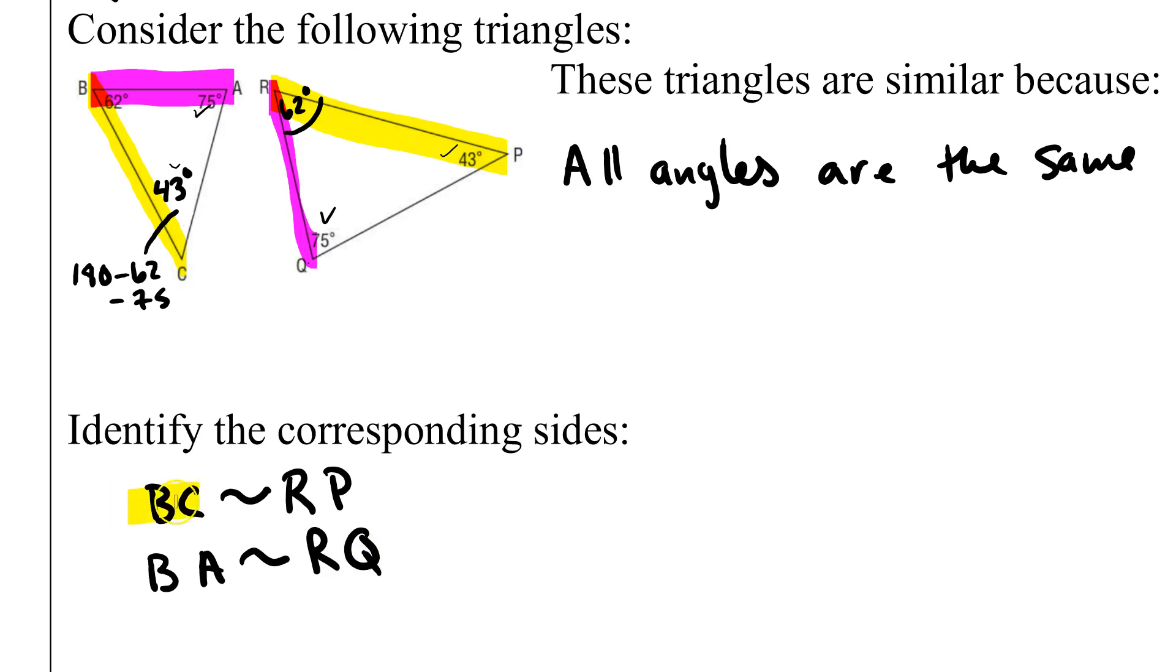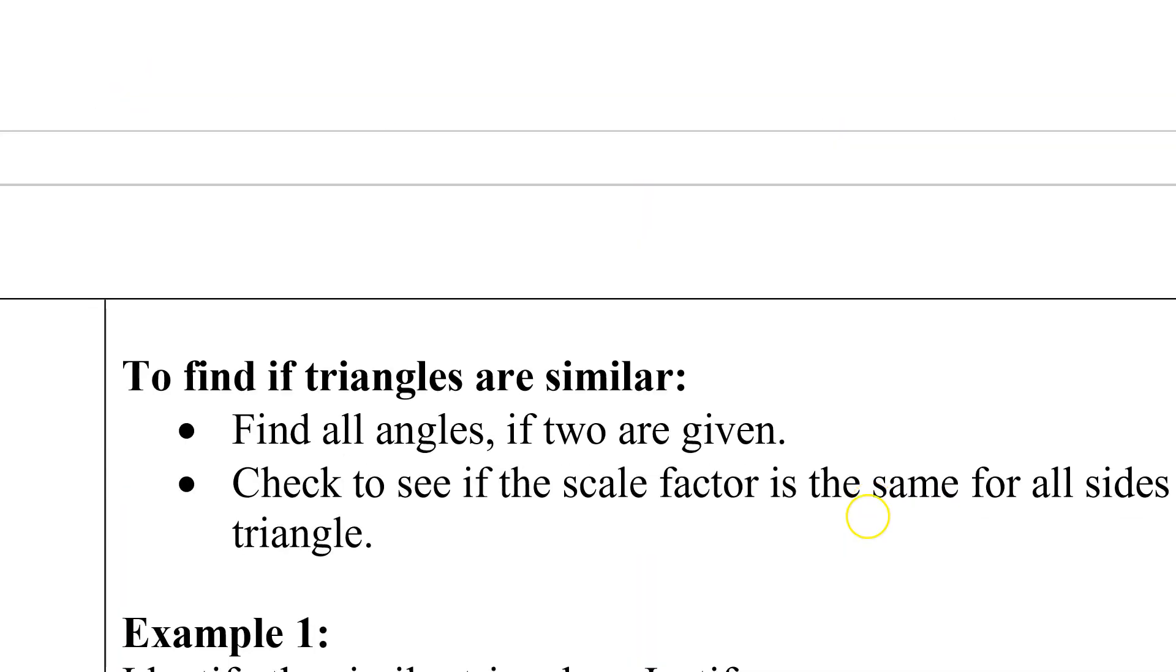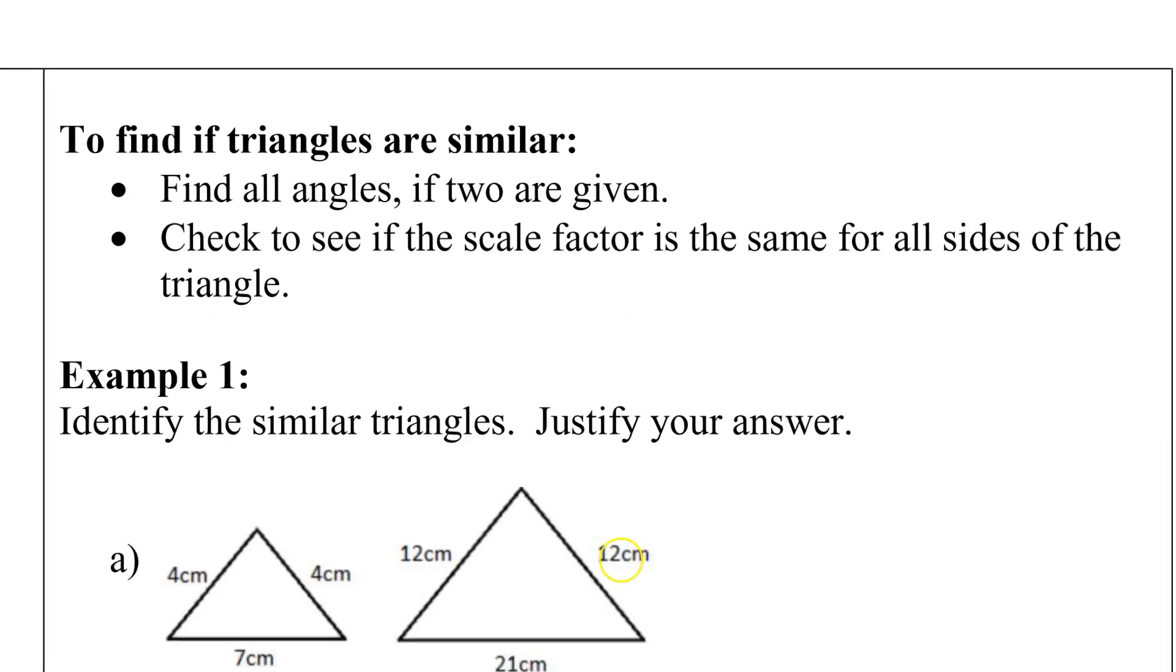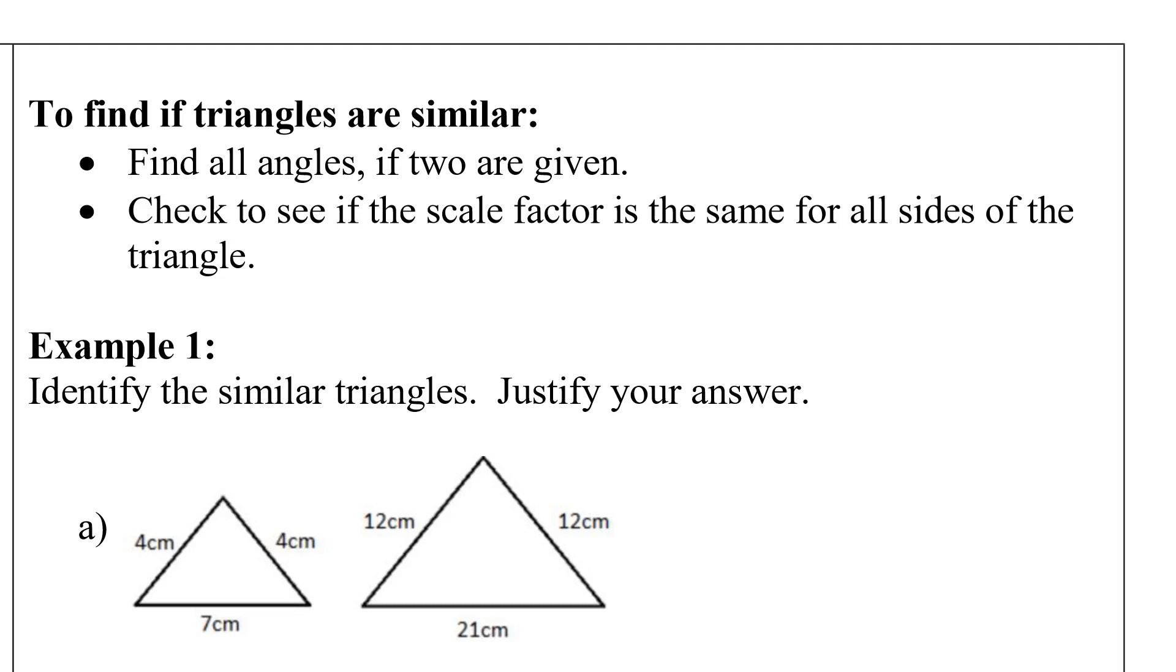Last but not least, I'm just going to highlight the colors so that you can see that. Let's finish off with green. From 75 to 43, AC is similar to QP. The 75 is A and the 43 is C is similar to or corresponds to Q to P. The order is kind of important because it's saying that B is the same angle as R. Keep that in mind. To find if two triangles are similar, find all the angles. See if two are given and then check to see if the scale factor is the same for all sides of the triangle.